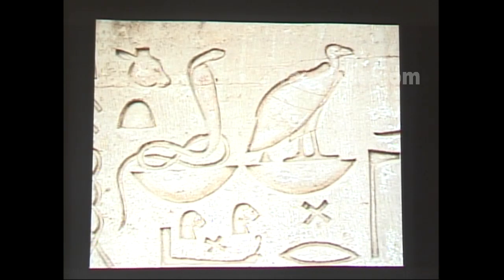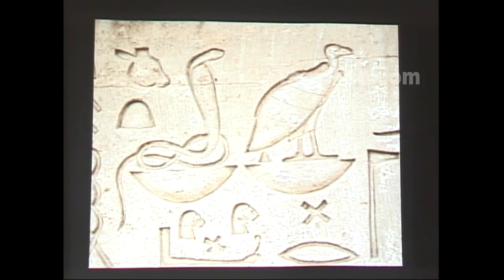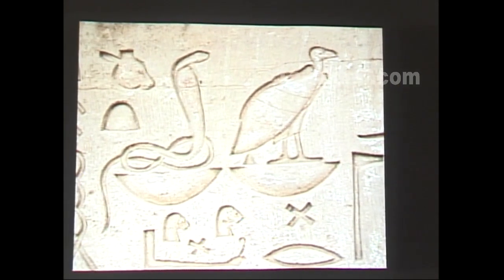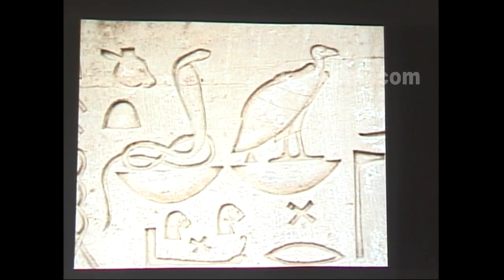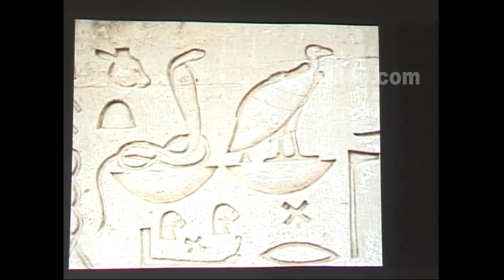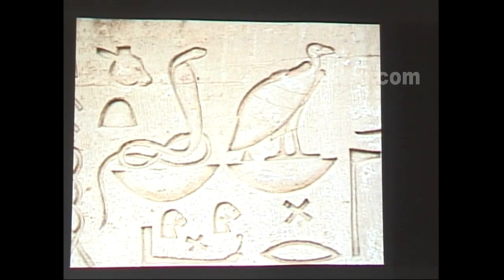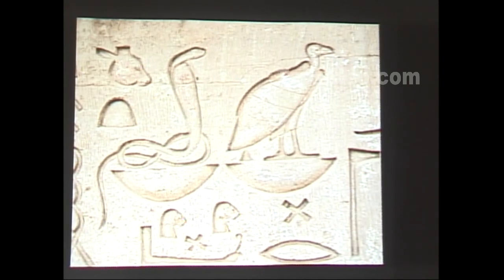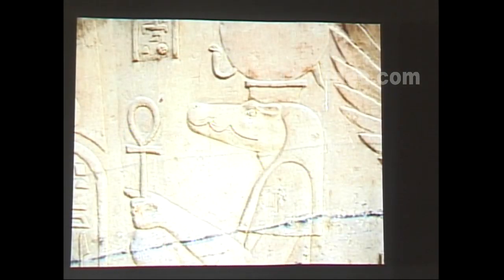And the different forms of the two goddesses — this is Nekbet and this is Wajet. This is Sebek again — this is Sebek-Ra.